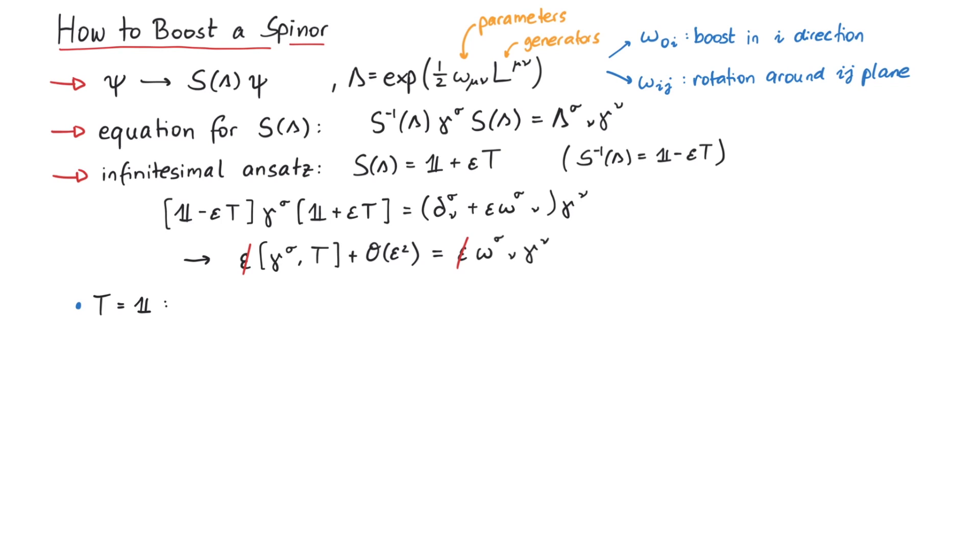First, let's try what happens for t equals 1. The commutator on the left vanishes, so this equation cannot be fulfilled. Next we could have a gamma matrix in t. The commutator then gives us a term with two gamma matrices and one without. But on the right, we have only one gamma matrix. This also won't work in general.